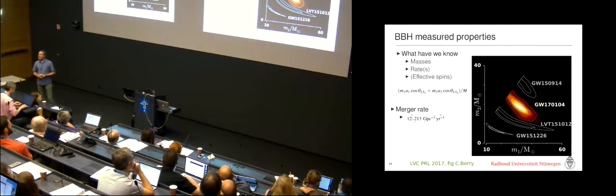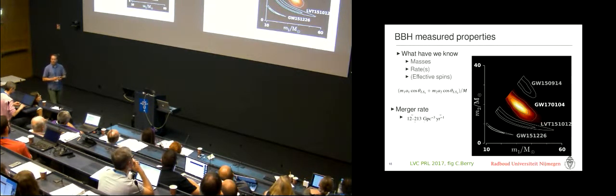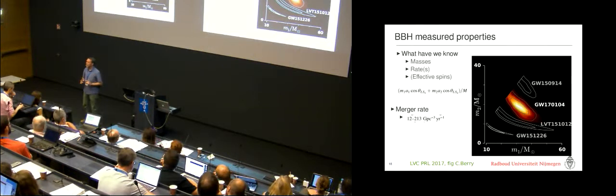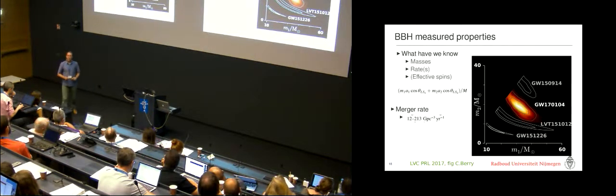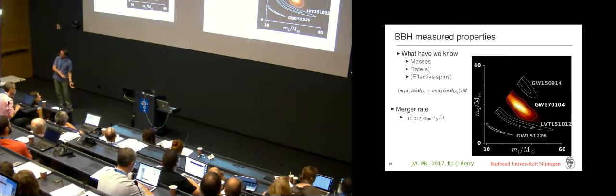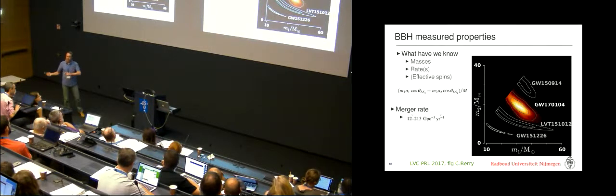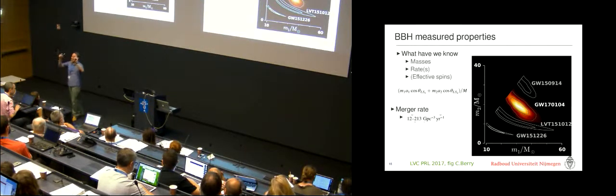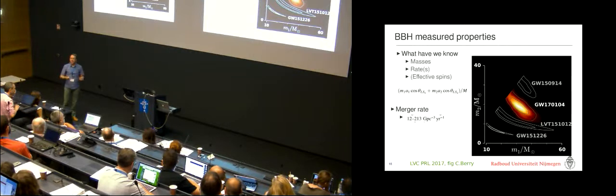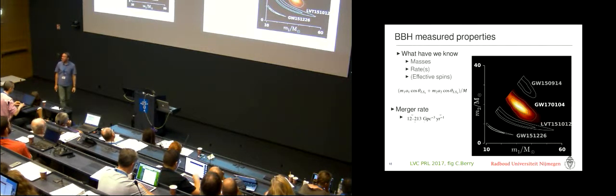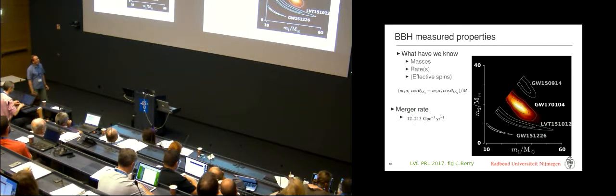And so of course the first one was really high mass and the second one was quite low mass or more some people would say more normal mass and the others are sort of in between. And so this immediately gives the hint that we're going towards measuring sort of a mass spectrum but we need more data. The other thing that you can measure is what's called the effective spin.